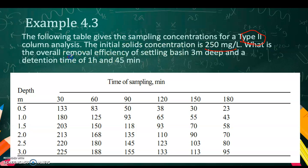Example 4.3: the following table gives the sampling concentration for a type 2 column analysis. The initial solid concentration C_0 is given. What is the overall removal efficiency? The height of the settling basin is 3 meters, and the detention time is 1 hour 45 minutes, which is 105 minutes.